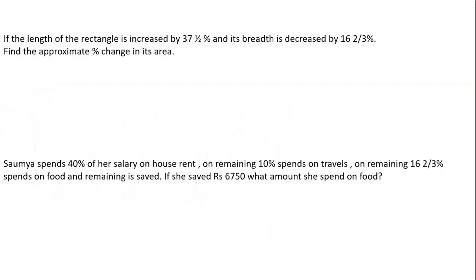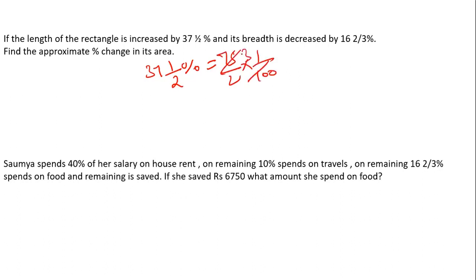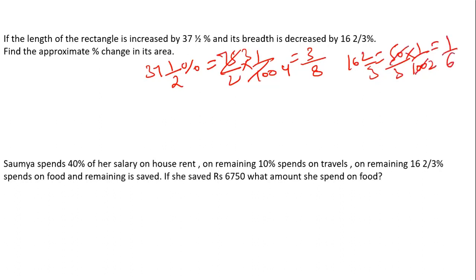Let's start with the first question: if the length of a rectangle is increased by 37½ percent and its breadth is decreased by 16⅔ percent, find the approximate percent change in its area. First, 37½ percent is nothing but 75/2, and dividing by 100 gives us 3/8. And 16⅔ percent can be written as 50/3 divided by 100, which gives us 1/6.